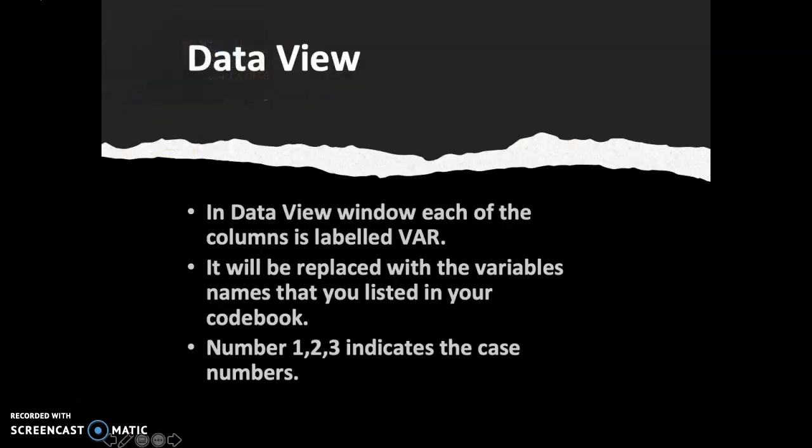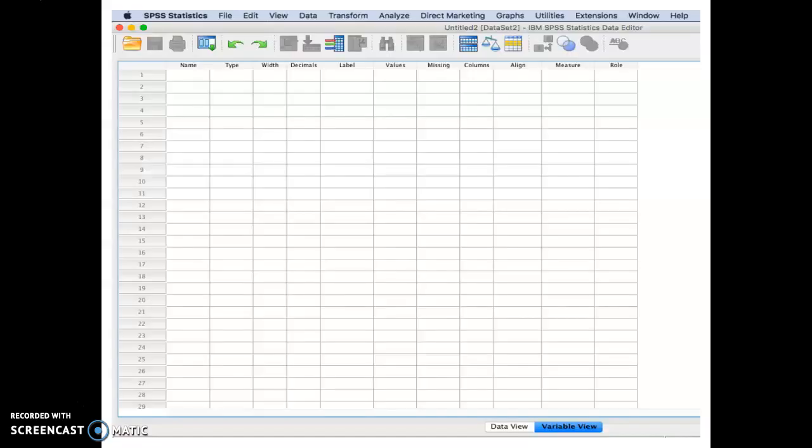So let us first look at what is data view. So in data view window, each of the column is labeled as VAR in capital letter. So var is referring to variable. It will be replaced with the variable's name that you listed in your code book. So whatever you wrote on the variable part, it depends on the codes that you have decided for your research. So number 1, 2, 3 indicate the case numbers.